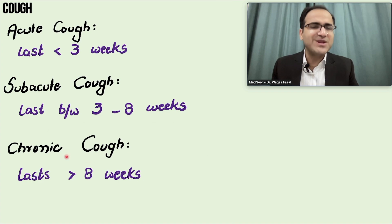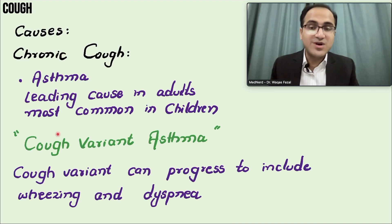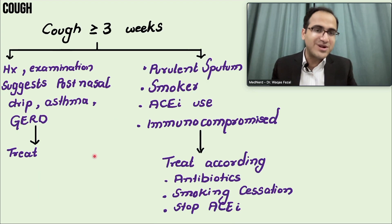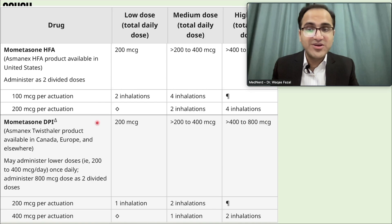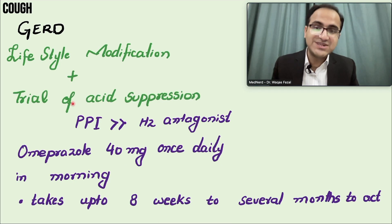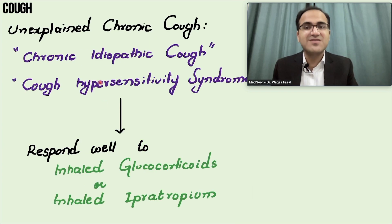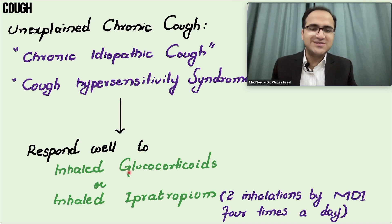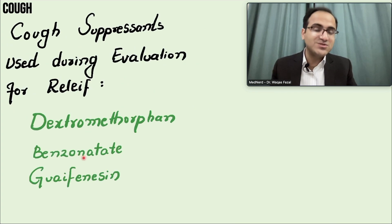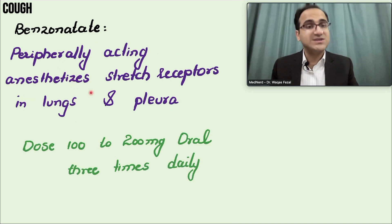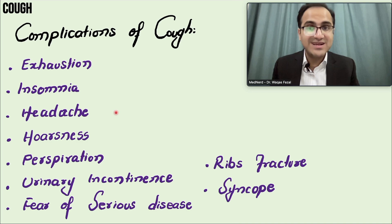In summary: acute cough is most commonly caused by infections; asthma (cough variant asthma) is the leading cause of chronic cough; GERD is the second and third most common cause; workup should include looking for danger signs. Asthma responds to inhaled glucocorticoids; GERD is managed with lifestyle modifications and PPIs; post-infectious and post-nasal drip cough responds to antihistamines; unexplained cough responds to glucocorticoids; gabapentin and pregabalin are central suppressants; opiates are for lung cancer patients; and dextromethorphan, benzonatate, and guaifenesin are other suppressants.